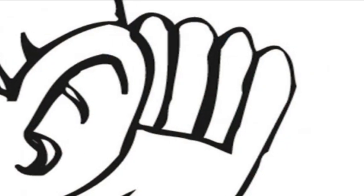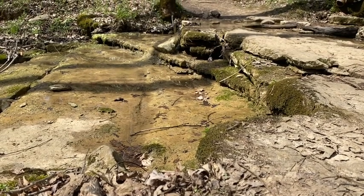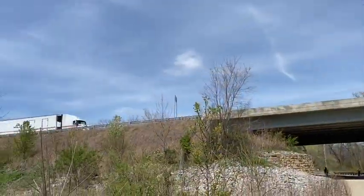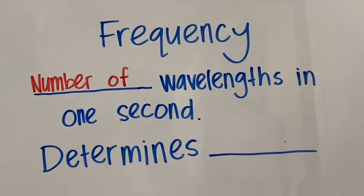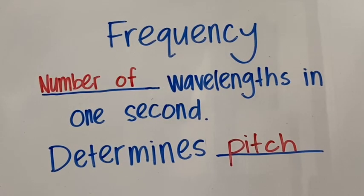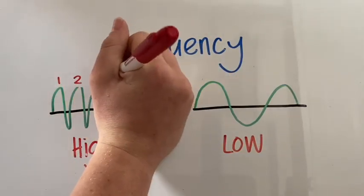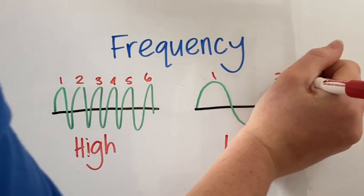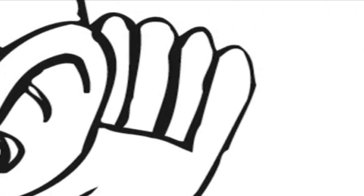Listen to these two sounds. Which one has a higher amplitude? Frequency measures the number of wavelengths in one second and it determines the pitch of a sound. The more wavelengths mean the higher pitch. The fewer wavelengths mean the lower pitch. Listen to these two animals — which one has a higher frequency?